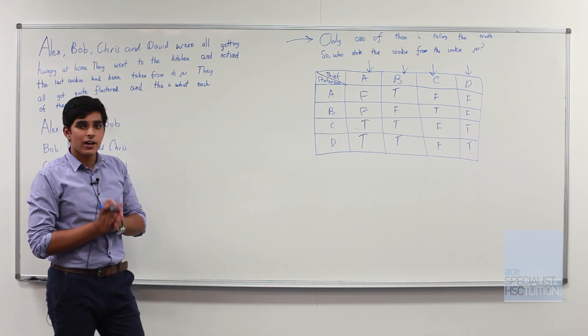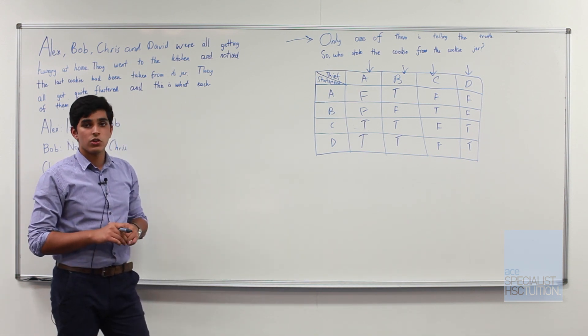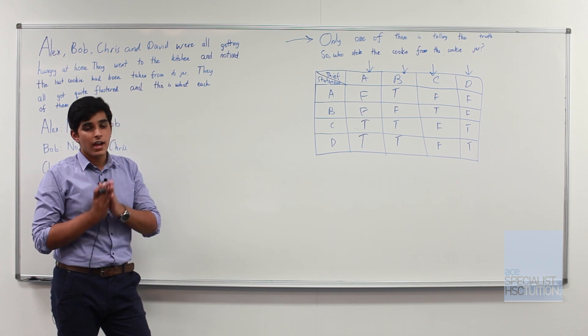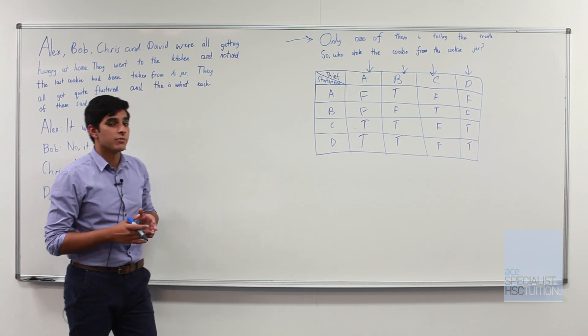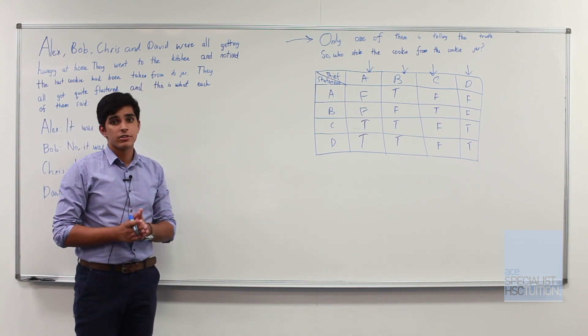So we can identify now that C is the person who stole the cookie in a 100% sure manner and we've finished the question effectively.